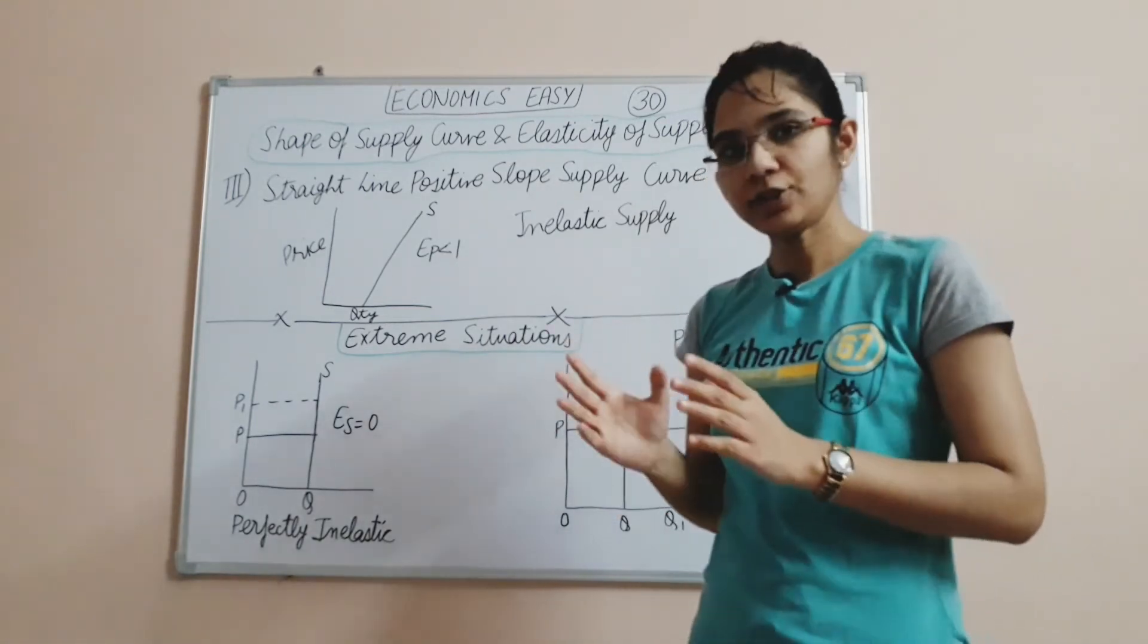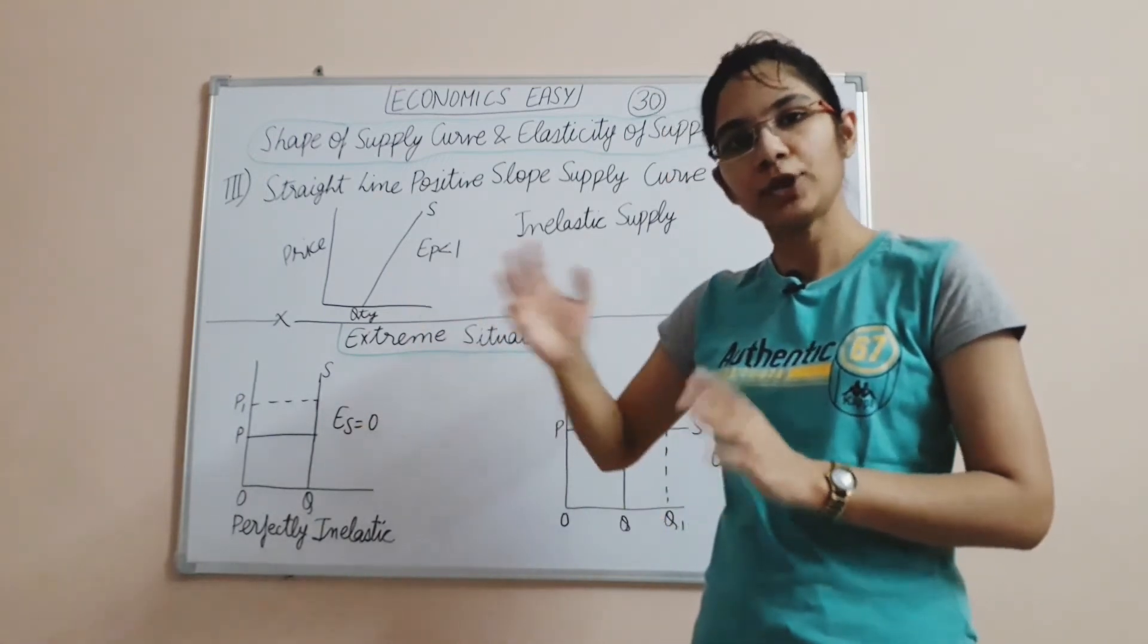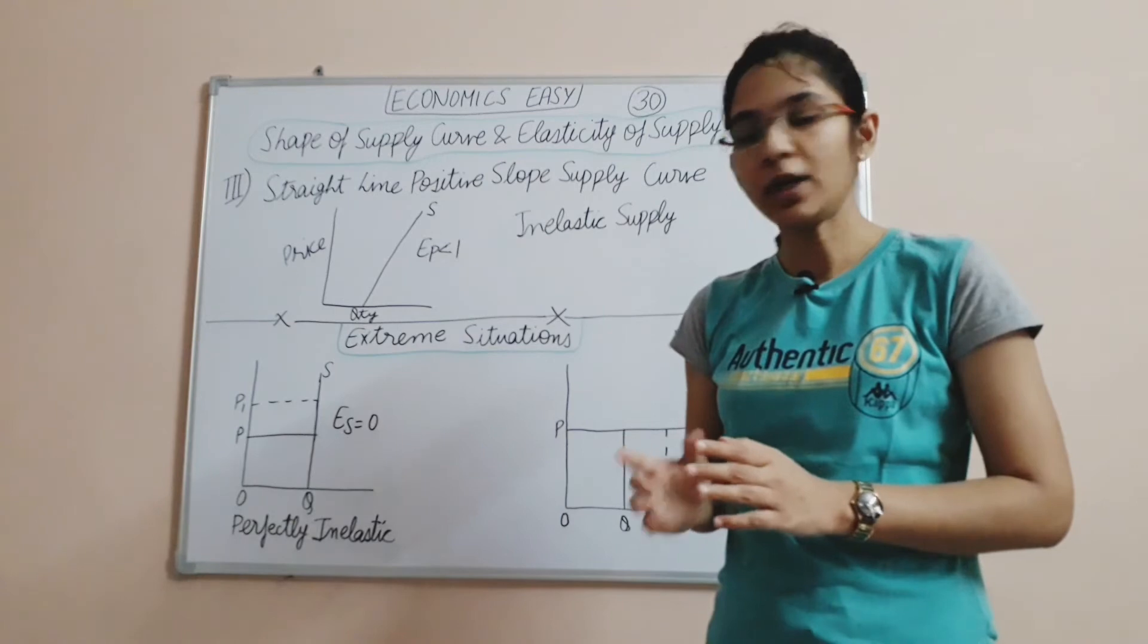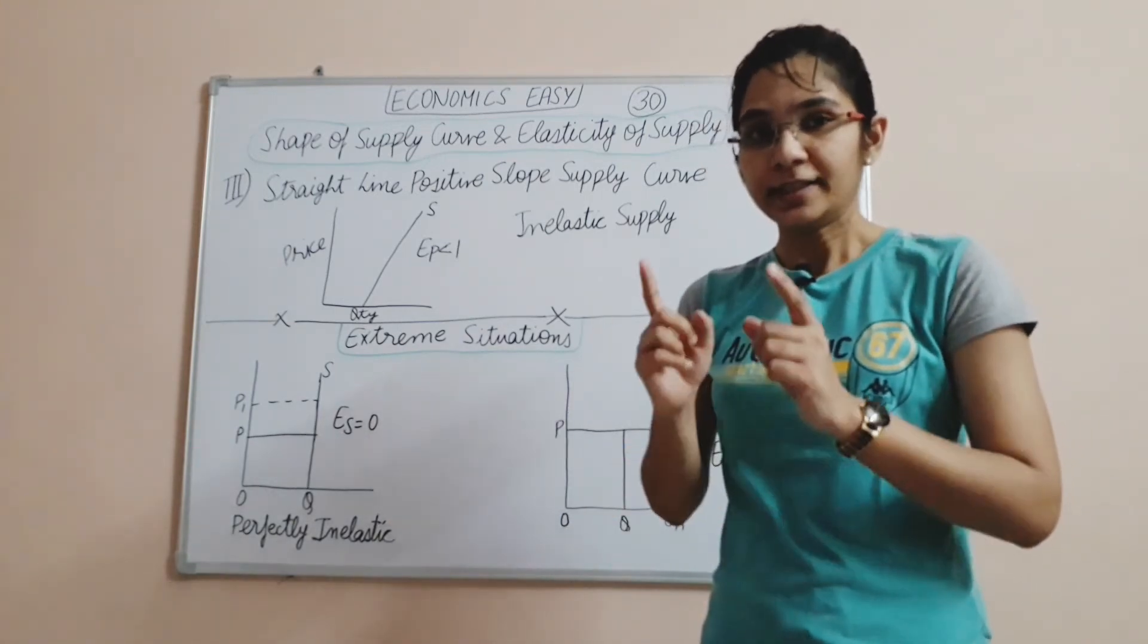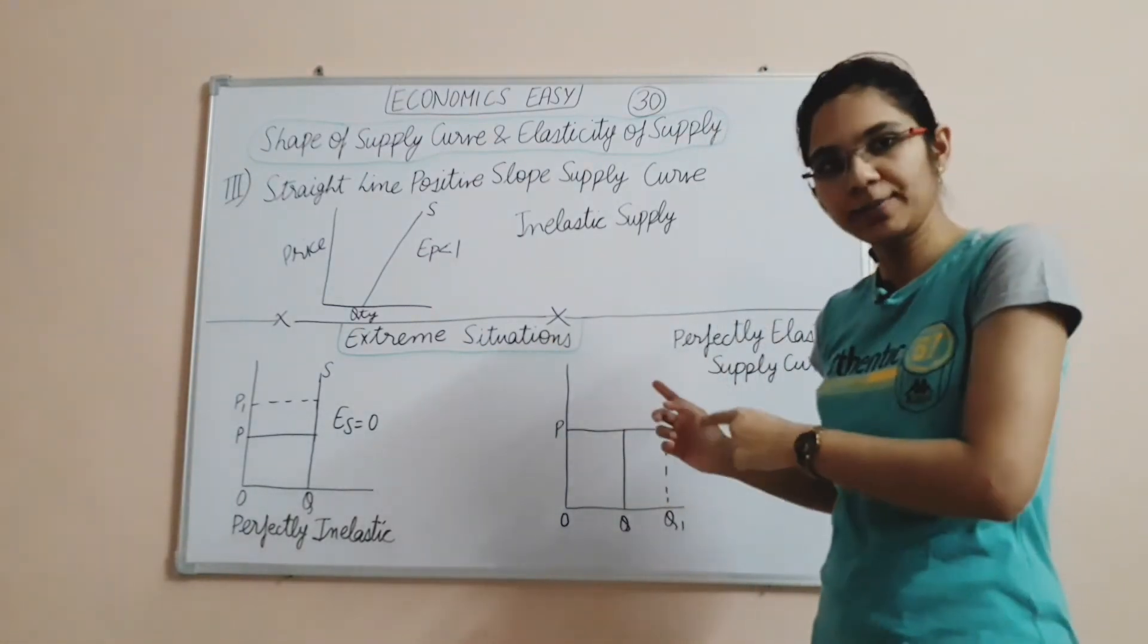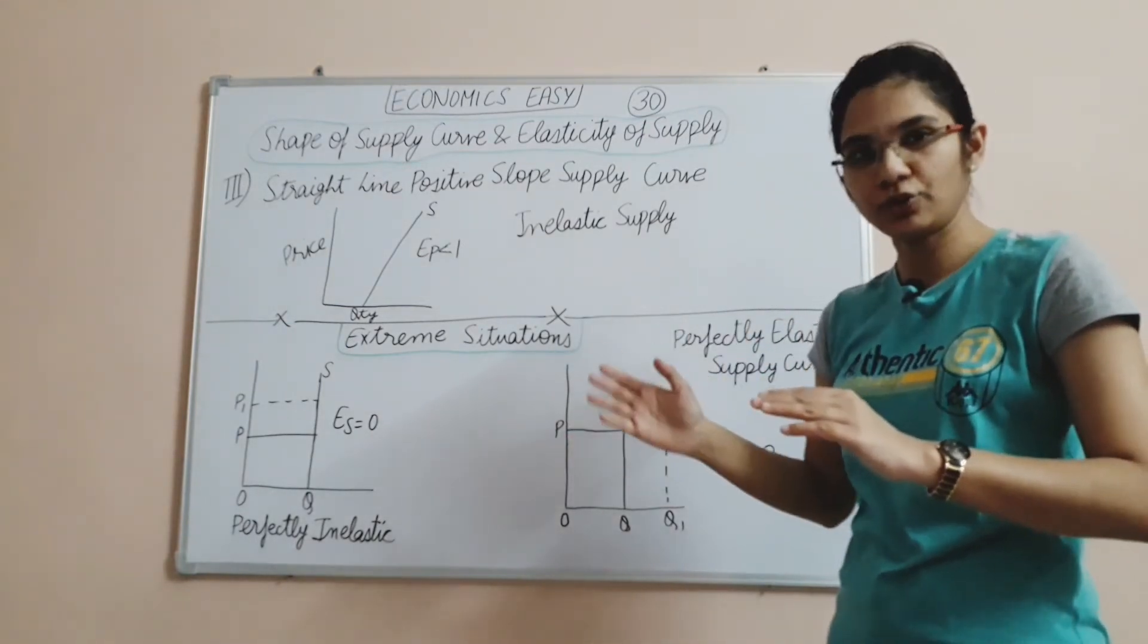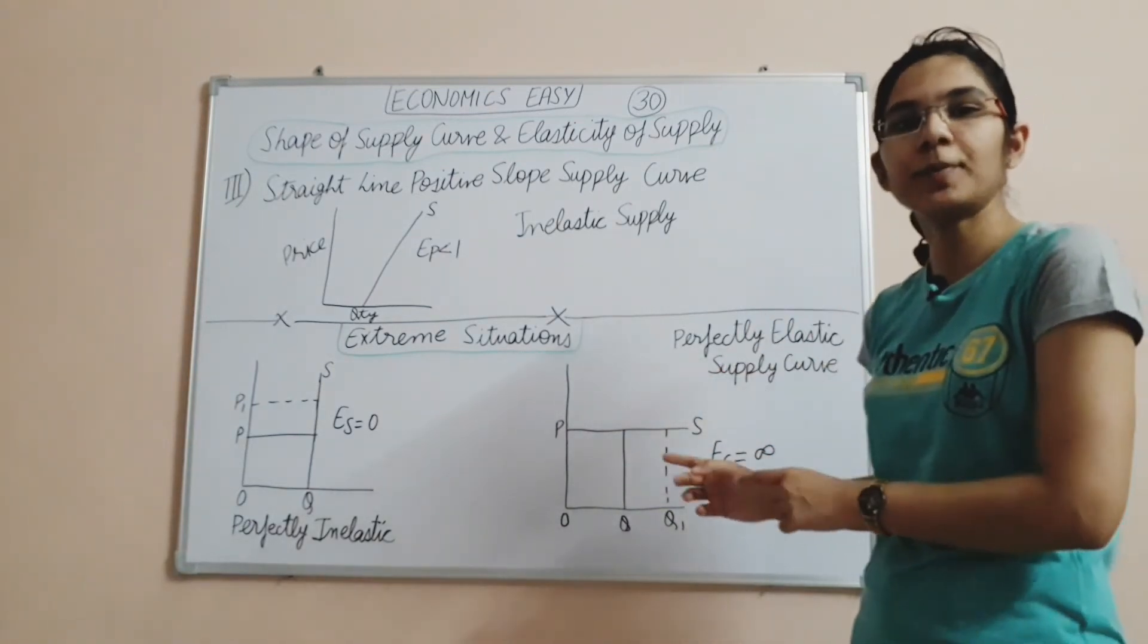There are two extreme cases. First situation: price changes, sometimes increasing, sometimes decreasing, but supply remains constant. When the supply curve is completely vertical, elasticity of supply is zero, which is perfectly inelastic supply. The next extreme situation is when price is constant but supply changes and fluctuates. Then the supply curve is perfectly elastic and elasticity will be infinity.